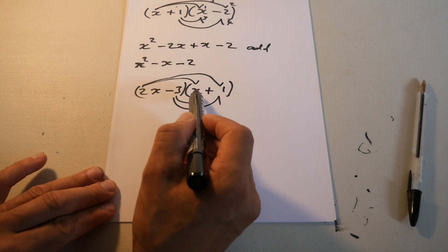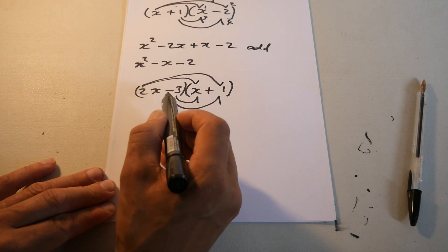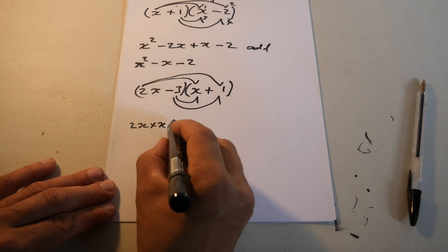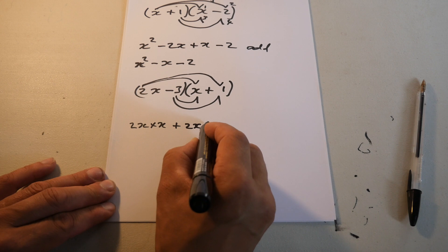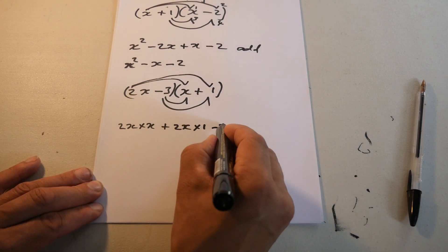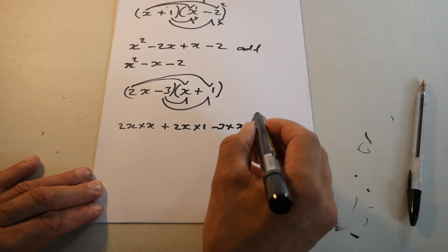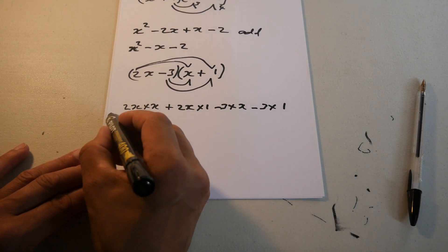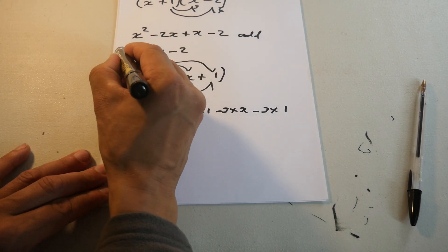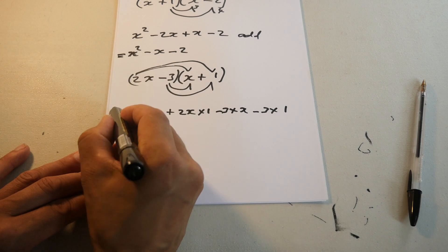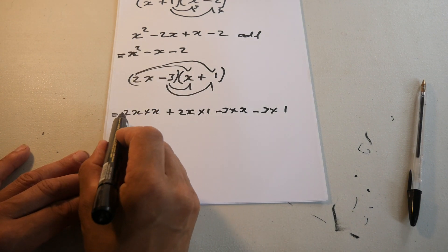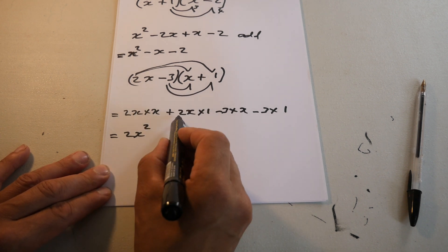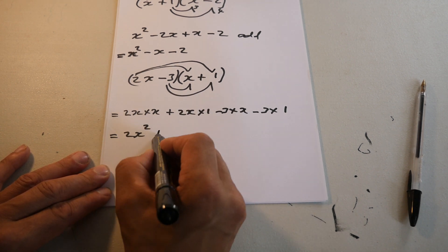So 2x times x is 2x squared. Plus 2x times 1 minus 3 times x minus 3 times 1. So 2x times x is 2x squared, plus 2x times 1 is just 2x.